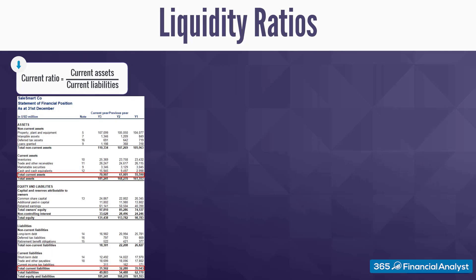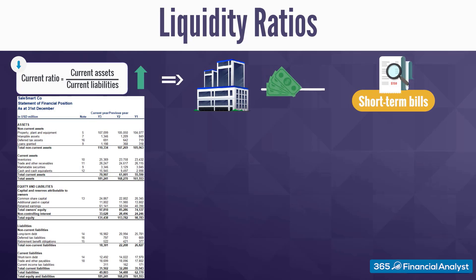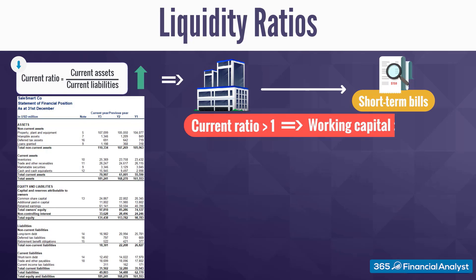The next step is to interpret the results. Clearly, the higher the current ratio, the more capable a company is to pay its short-term bills. Simple as that. A firm with a current ratio value of more than one has a positive working capital. Can we say that for sure? Yes, we can.